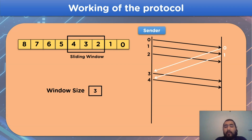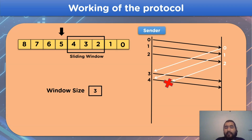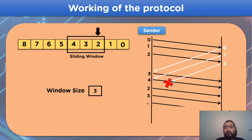For frame number 2, when we would normally receive the acknowledgement from the receiver side, there is a catch — due to a network issue, the acknowledgement is not received by the sender side. In this case, the sender side will not transmit frame number 5; instead, it will retransmit frame numbers 2, 3, and 4, where frame 2 is the one that did not receive its acknowledgement, and all frames sent after it — frames 3 and 4 — must be retransmitted along with it.